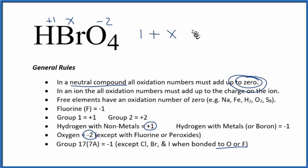One plus x minus two times four. We have four oxygens. That's going to equal zero. Then you just solve for x.